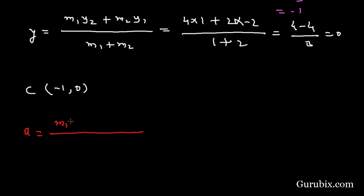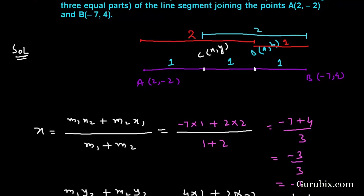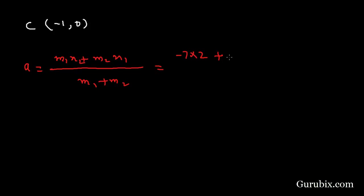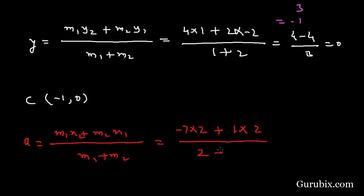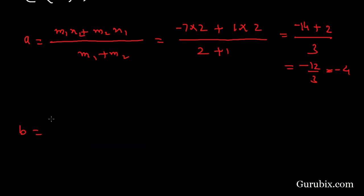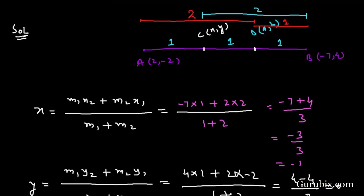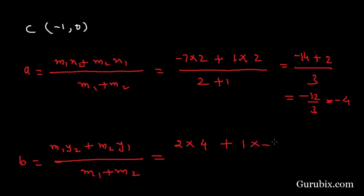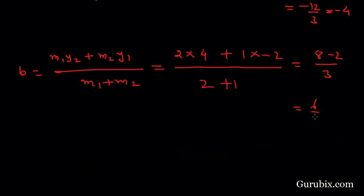Using the section formula x = (M1·X2 + M2·X1) / (M1 + M2) with M1=2 and M2=1: x = (2×(-7) + 1×2) / (2+1) = (-14 + 2) / 3 = -12/3 = -4. For the y-coordinate: y = (2×4 + 1×(-2)) / (2+1) = (8 - 2) / 3 = 6/3 = 2.